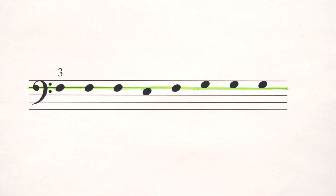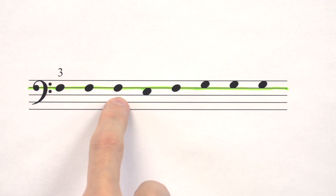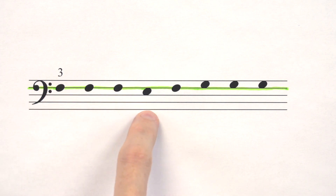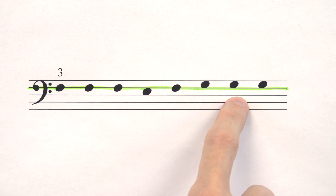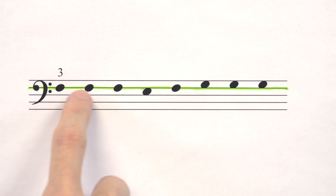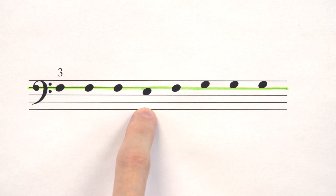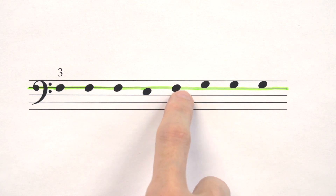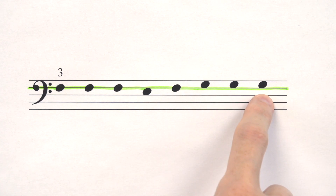Now can you name the letter names? It starts on F. The correct answer is F, F, F, then it steps down to E, back up to F, then steps above F to G, G, G.